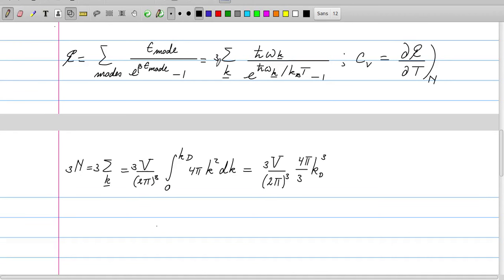We know how many modes we have in total, that's 3N. That can also be written as three times the sum over all the k's. The sum over k's can be replaced by a factor of V over 2π to the third times an integral over the k's. That integral runs up to a maximum wave vector.